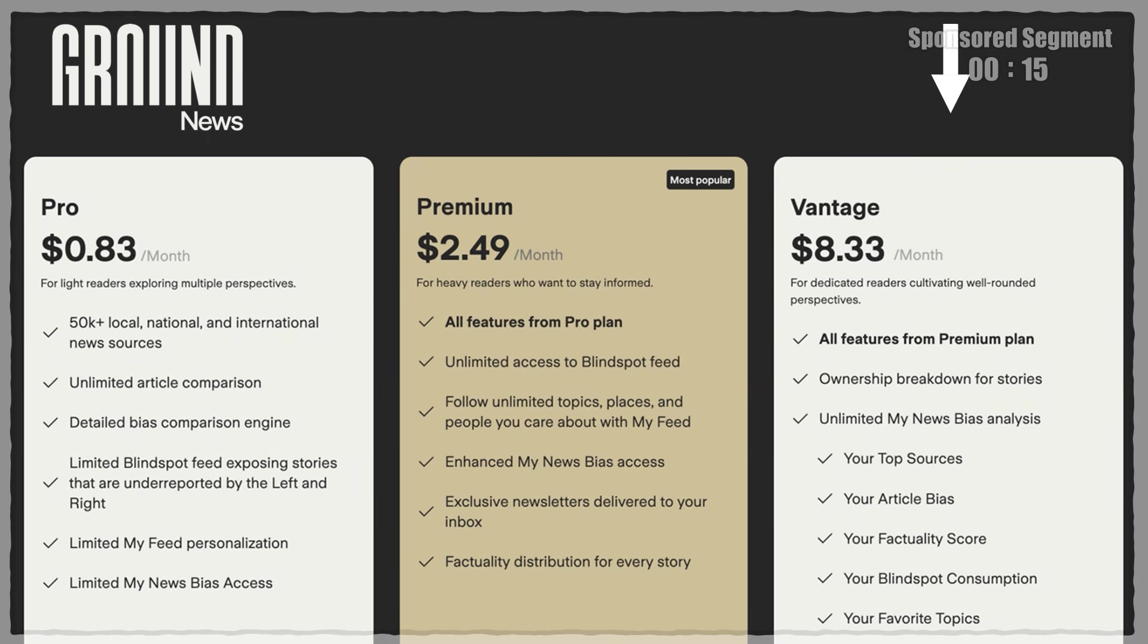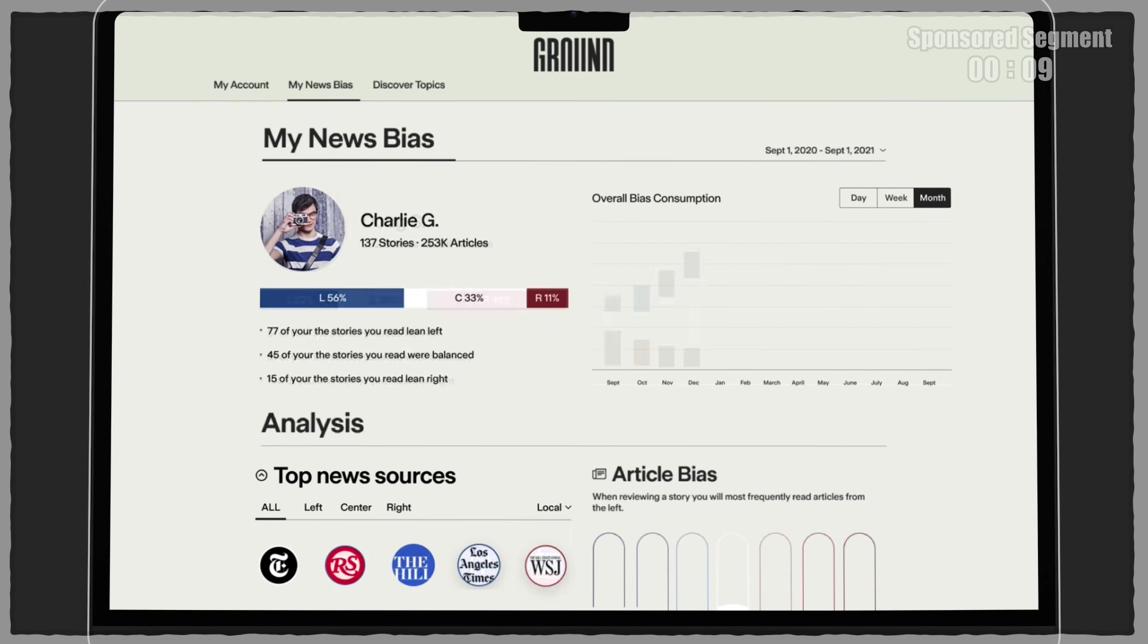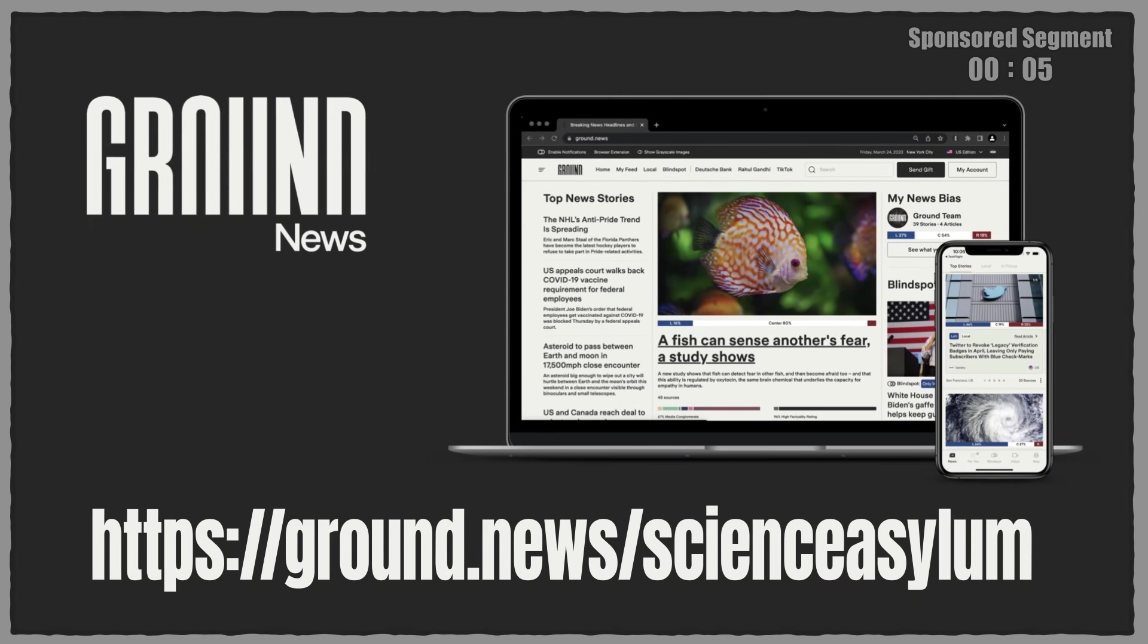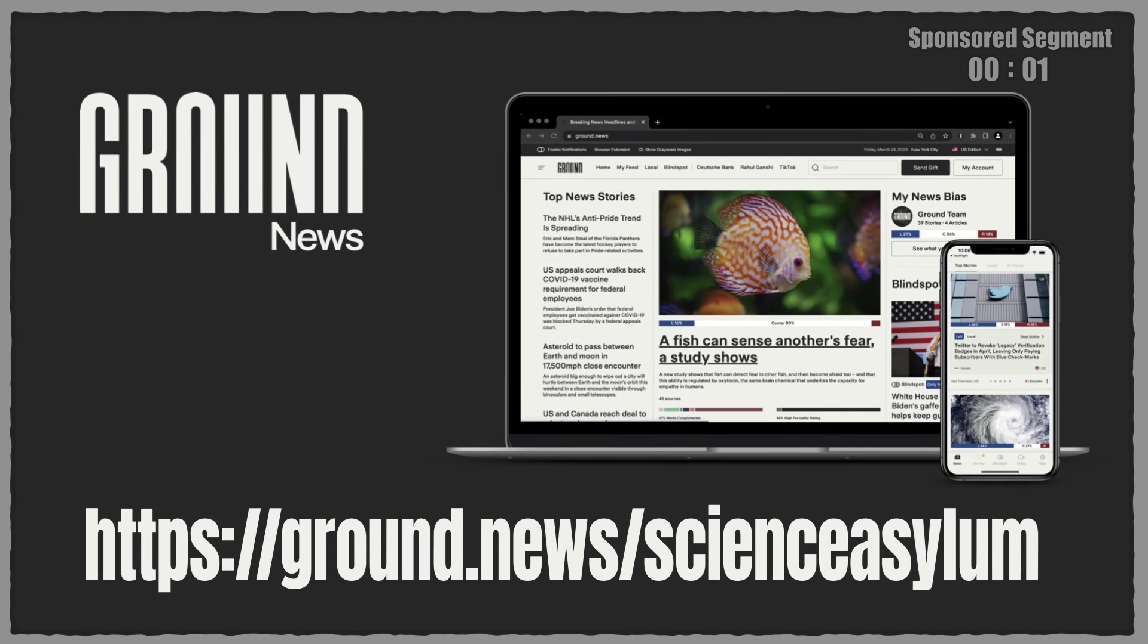Right now, they're having a holiday sale, their biggest sale of the year through December 31st. You'll get 40% off their Vantage plan. That's unlimited access to all of their features, including that My News Bias I mentioned earlier. If you're interested, get Ground News for just $5 per month by going to ground.news/ScienceAsylum or clicking the link in the description below.